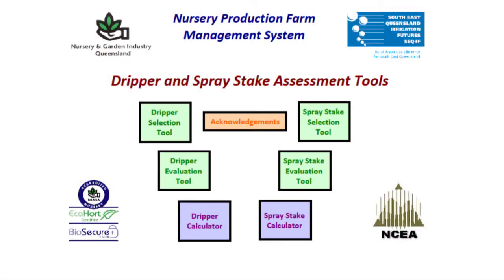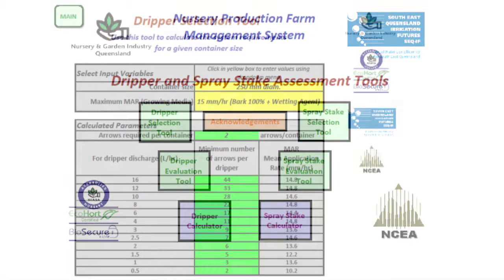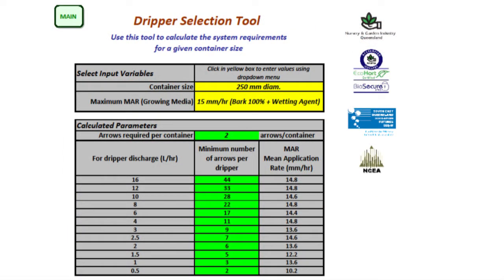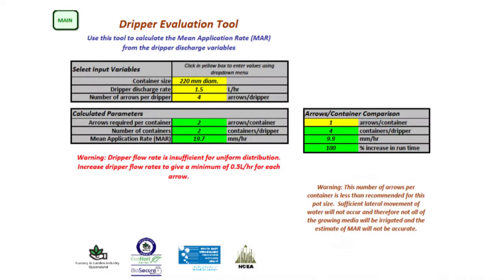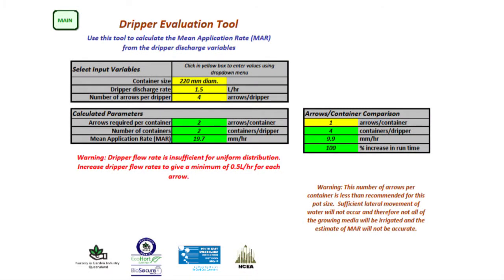The Nursery and Garden Industry Queensland has developed a dripper and spray stake assessment tool to evaluate the container size and growing media, and provide a guide to the dripper flow requirements and the number of arrows that may be required in each container. Contact the Nursery and Garden Industry Queensland for further information.